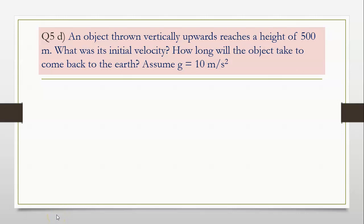Students, now we do problem 5d. An object thrown vertically upwards reaches a height of 500 meters. What was its initial velocity? How long will the object take to come back to earth? Assume acceleration due to gravity g is equal to 10 meter per second square.